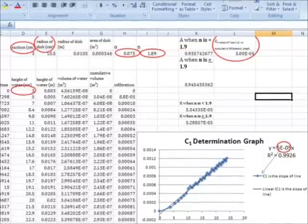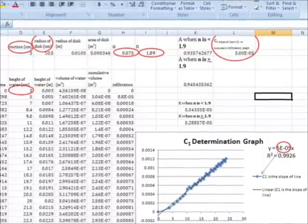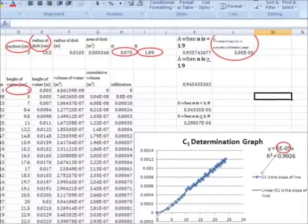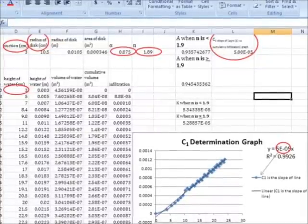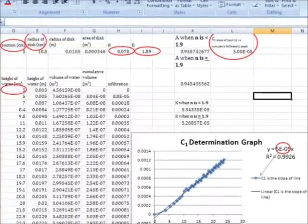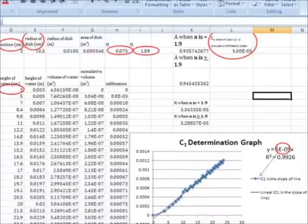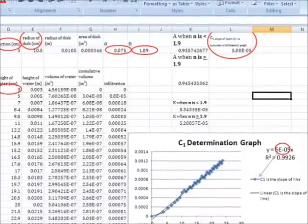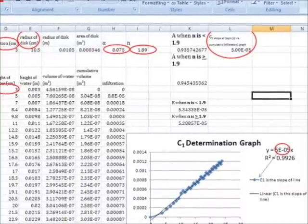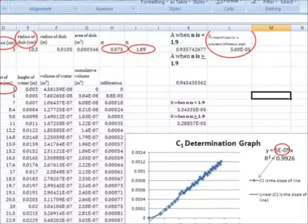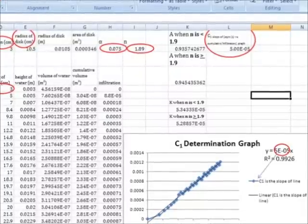Finally, as the datasheet shows, K equals C1 over A. While A is found from the previously seen equation, C1 is garnered through finding the slope of a graph of the square root of time plotted against infiltration.